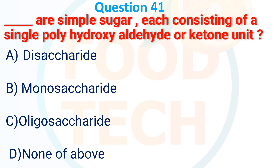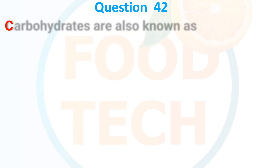Question 40: Simple sugars, each consisting of a single polyhydroxy aldehyde or ketone unit, are — A. Disaccharide, B. Monosaccharide, C. Oligosaccharide, D. None of the above. The answer is B. Monosaccharide.